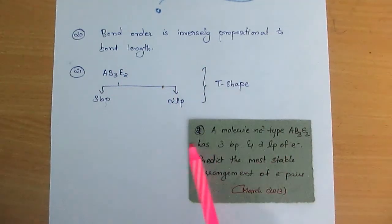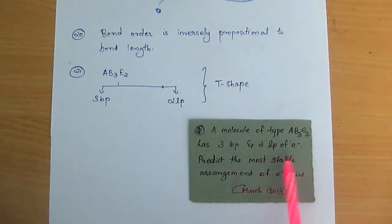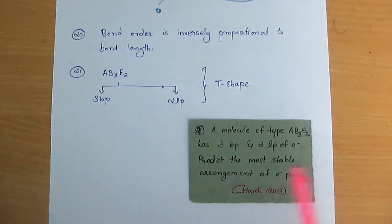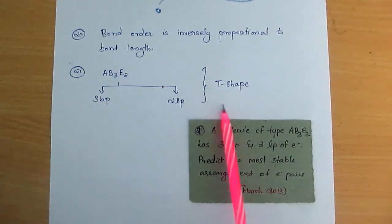The 21st question, asked in March 2013: a molecule of type AB3E2 has 3 bond pairs and 2 lone pairs of electrons — predict the most stable arrangement of electron pairs.